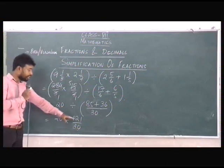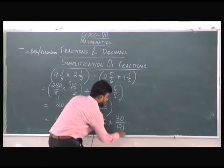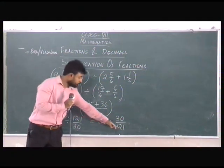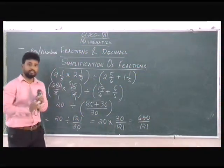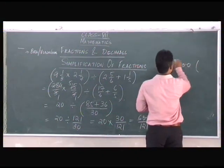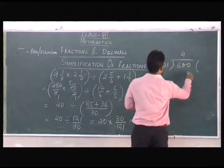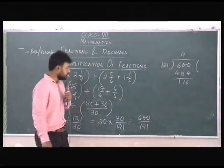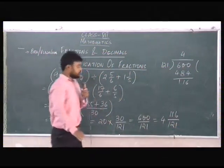In the next step, we have 20 divided by 121 by 30. So we take 20 into 30 by 121. Nothing can be cancelled here, so we multiply these two numbers and get 600 by 121. This can be changed into a mixed fraction by dividing 600 by 121. We get 4 as the answer and 116 as the remainder, so we write it as 4 and 116 by 121.